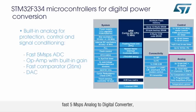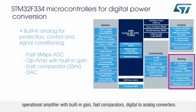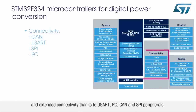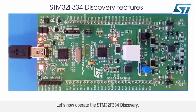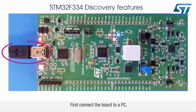Built-in analog features include a fast 5 mega samples per second analog-to-digital converter, operational amplifiers with built-in gain, fast comparators, and digital-to-analog converters, plus extended connectivity through USART, I2C, CAN, and SPI peripherals.